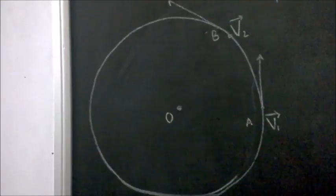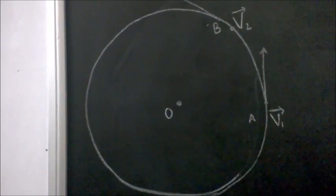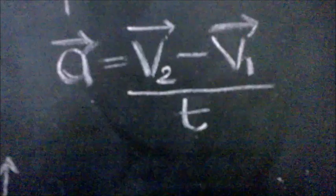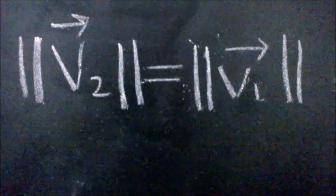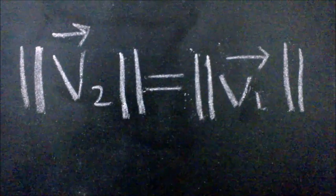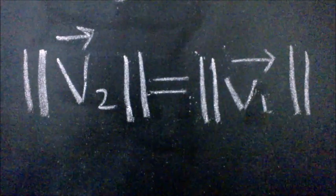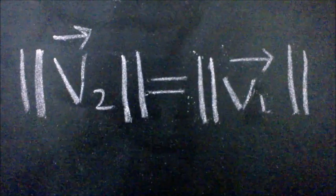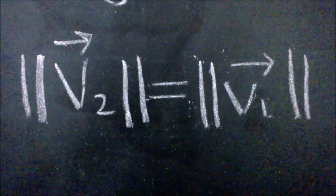Therefore, the acceleration would be equal to v2 minus v1 upon T. Since the ball is moving with a uniform speed, the magnitude of the velocities will remain the same whereas the direction will keep on changing.